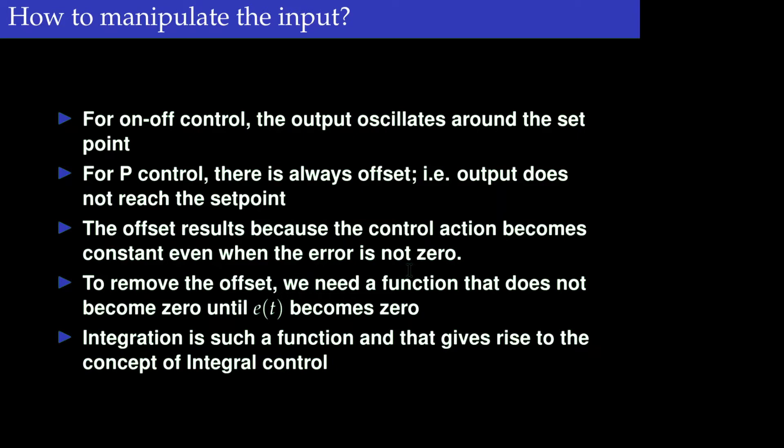The objective of the controller is to make the error to be zero, but the proportional action cannot do that. Increasing the gain can reduce the offset, however it cannot be eliminated. We need a function that will not become zero until the error term becomes zero — integration is such a function. That gives rise to the concept of integral control.